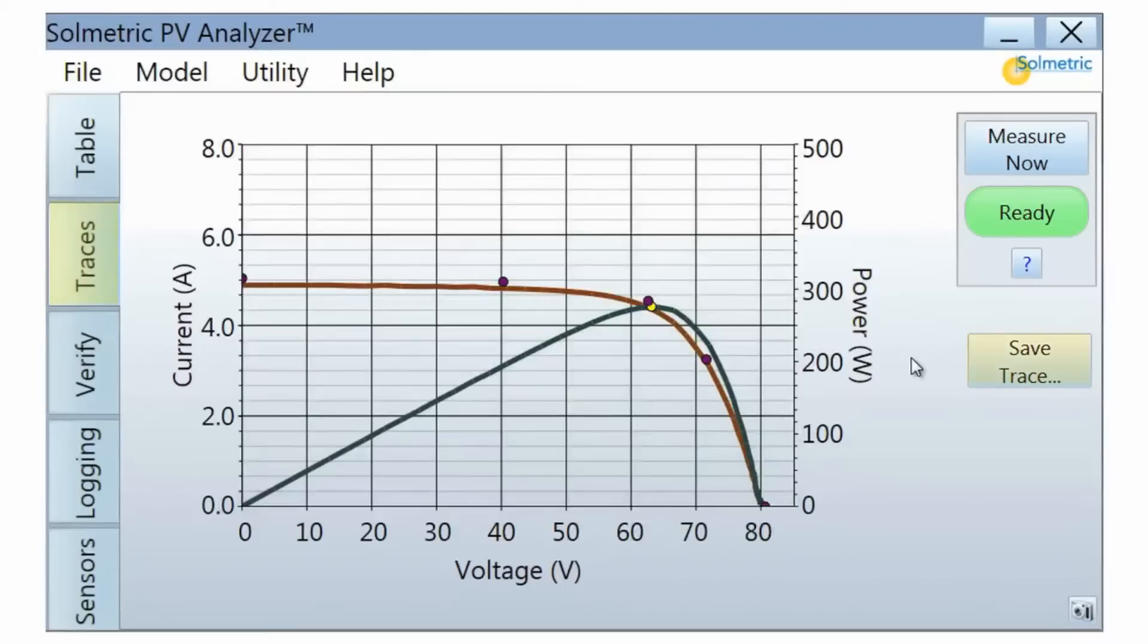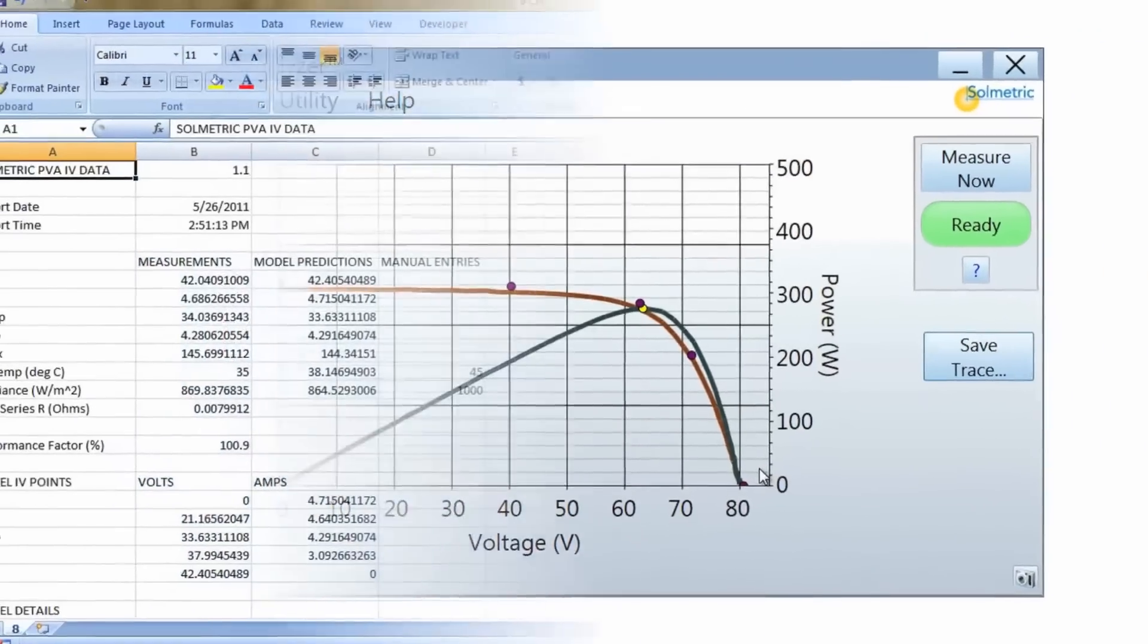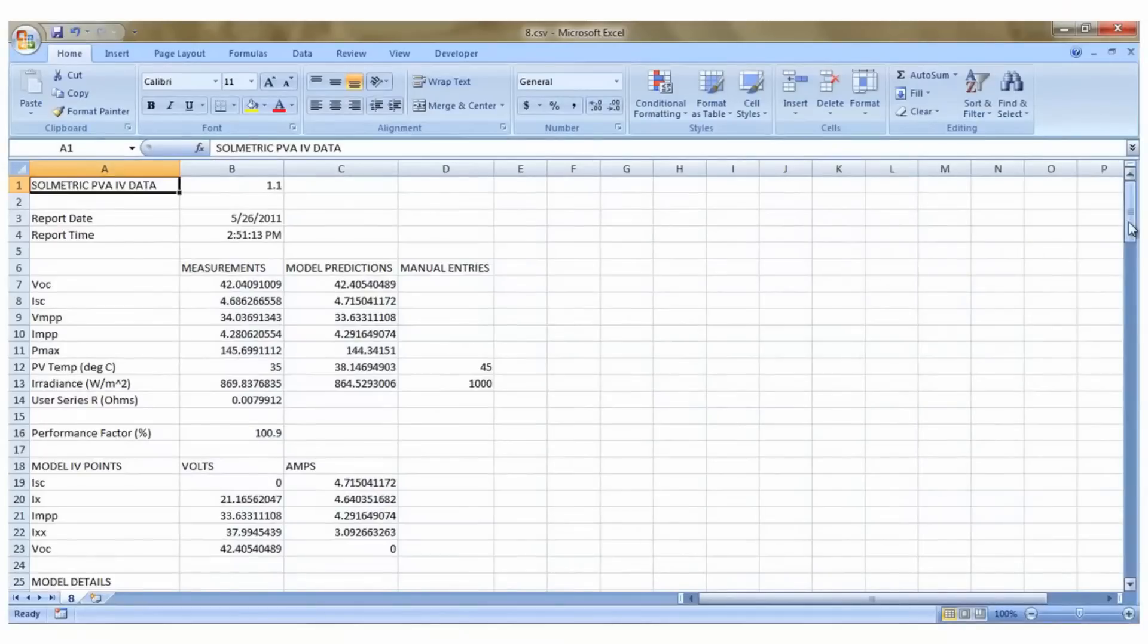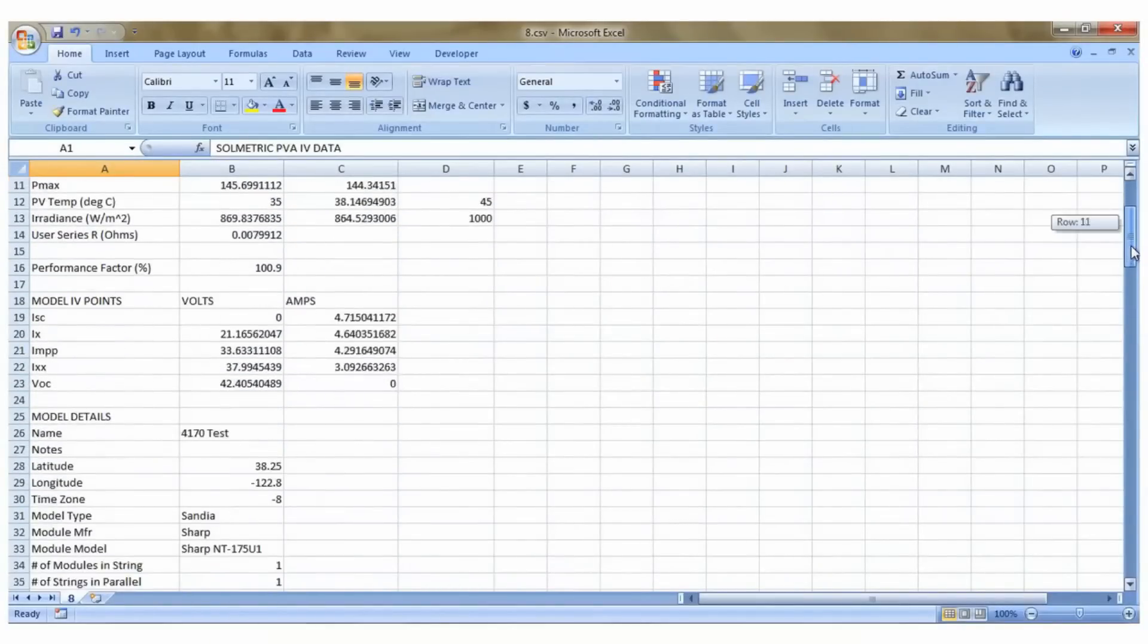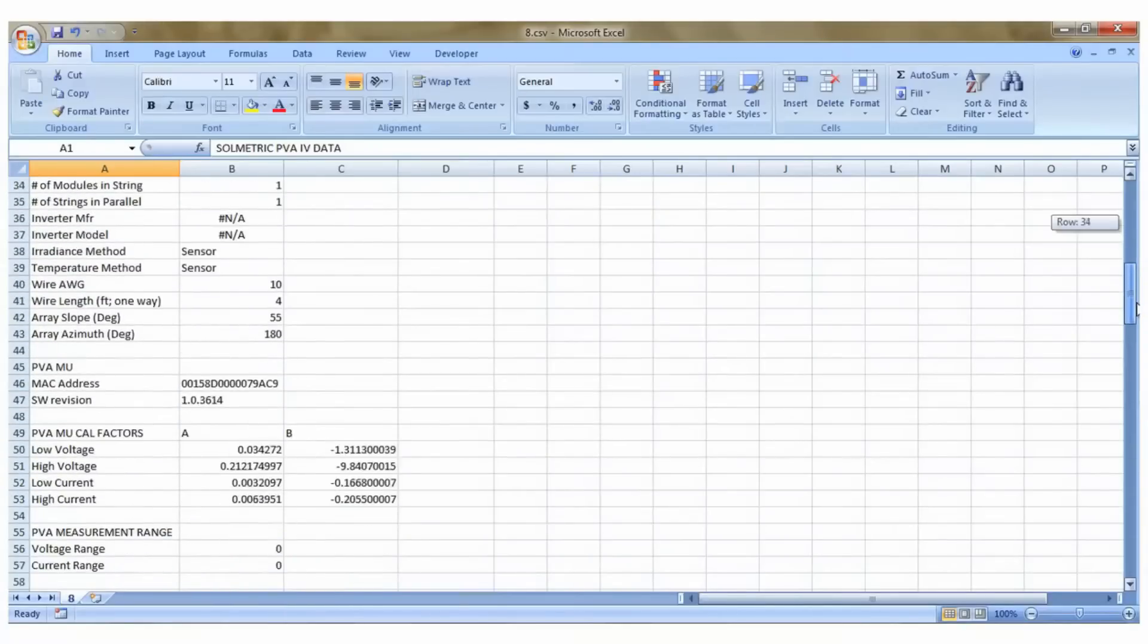In the Traces tab, you can save the results of a measurement by pressing the Save Trace button. Each trace can be stored on the PC in the form of a CSV file which can later be opened in a spreadsheet program such as Microsoft Excel. Data files include a record of all the measurements made by the PV Analyzer, as well as the predictions of the performance model.